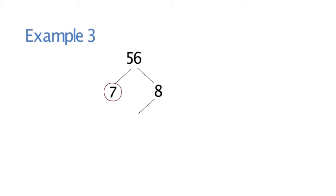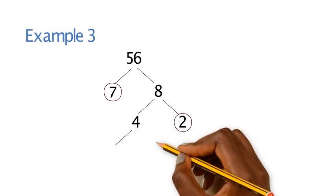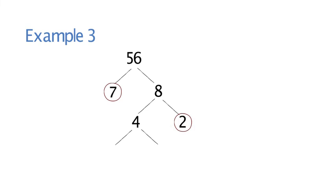Break down 8 further. You could have 4 and 2. 2 is a prime number, so we're going to circle that. Then you can break down 4 further into 2 and 2, and we can circle those. This is why they're called prime factor trees because it forms a kind of tree shape. Your answer would be 7 times 2 cubed because you've got 3 lots of 2.